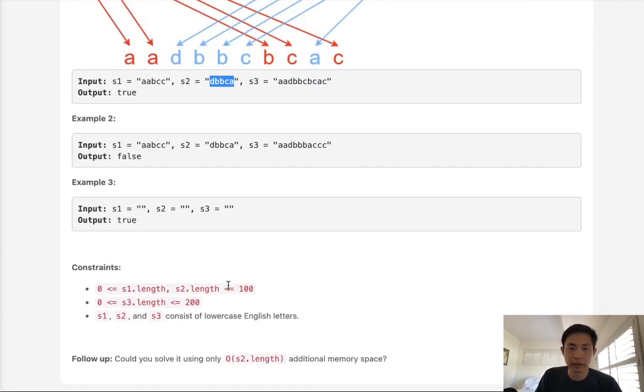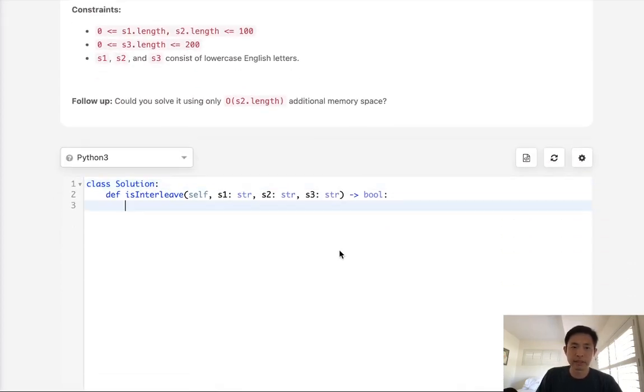Initially I thought this was a pretty simple problem of using two pointers and just iterating down the string trying to see if we could match each one, but the reason that's not going to work is say that we had some string like this as well as another string like bbcc, and say that we're trying to figure out can we create this one here a a b b c c b b.